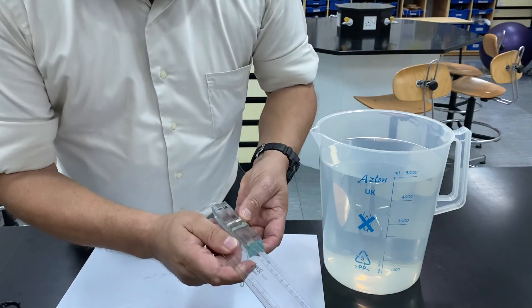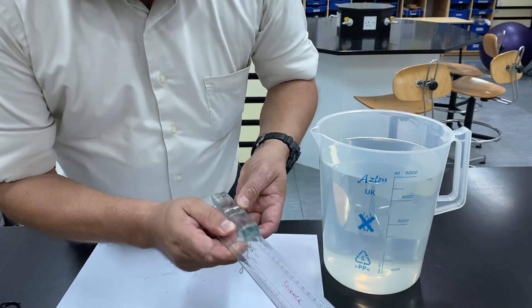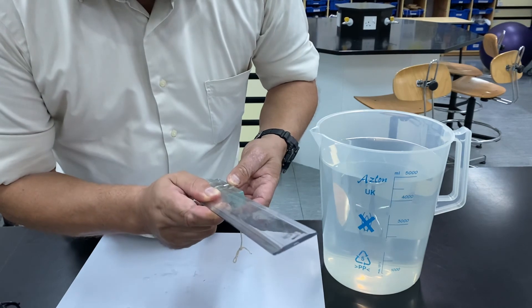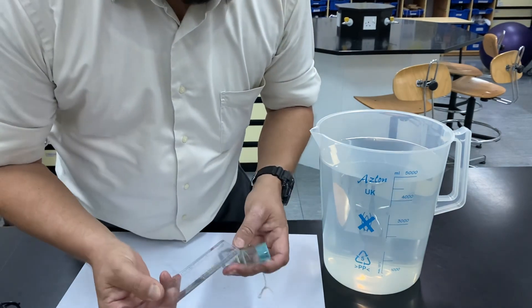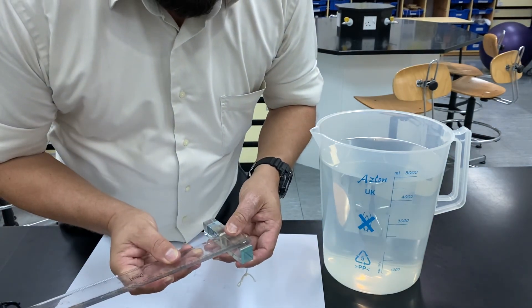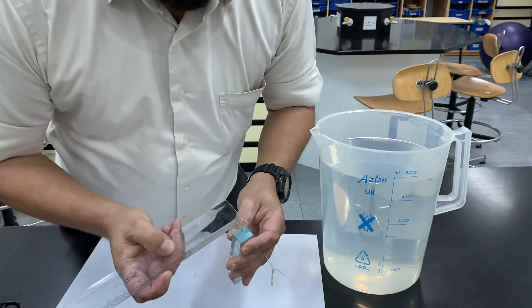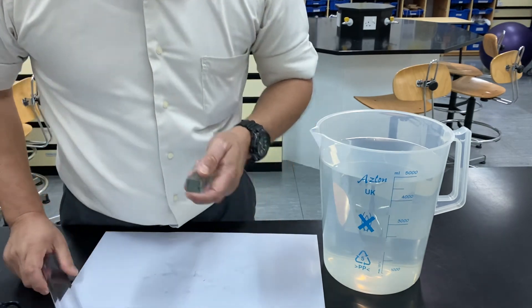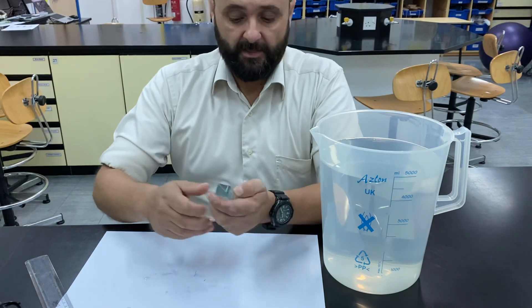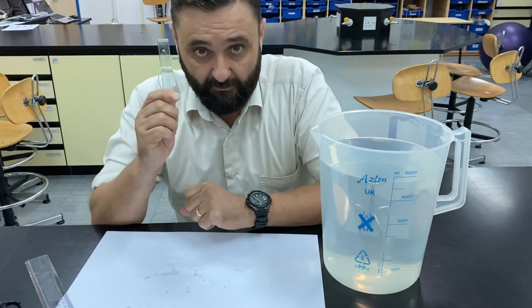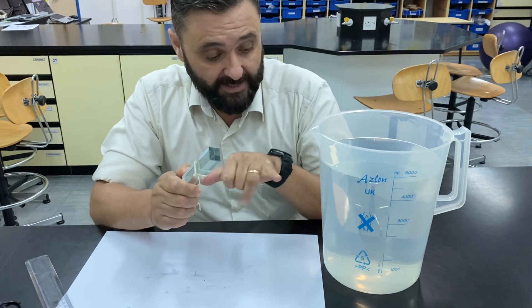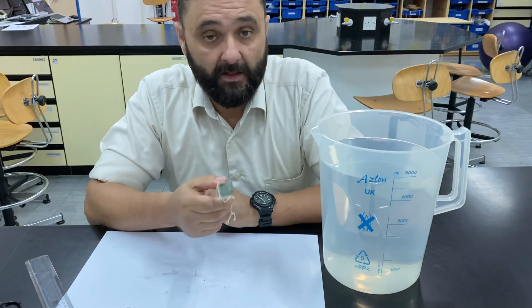So I'll just repeat those. Length is 102 millimeters. Height is 18, and width is 20 millimeters. There you go. You've got the dimensions. You can work out the volume. You need the density of water to then find out.